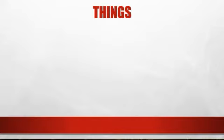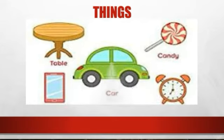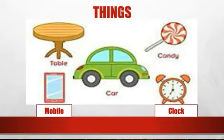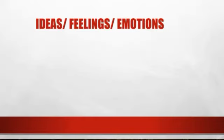Nouns can be names of things. For example: names of vegetables, fruits, and electronic items. Examples include: table, candy, mobile, and many other everyday things.